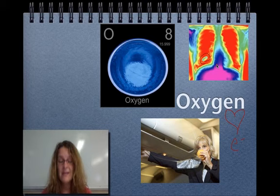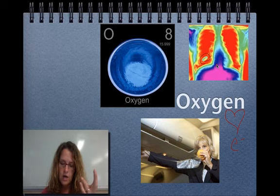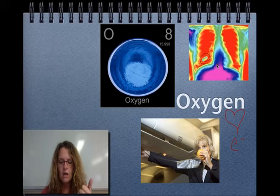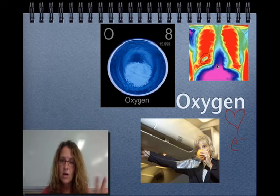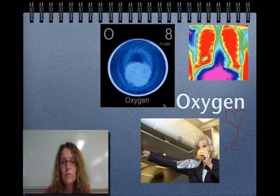And then oxygen is the third most abundant element in the universe. So just in carbon, hydrogen, and oxygen, hydrogen is the most abundant element in the universe. Oxygen is the third most abundant element in the universe, and carbon is the fourth. So there you've already got some pretty important elements that are the basis for most of the life on this planet.